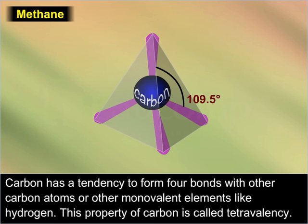For example, a molecule of methane has a tetrahedral structure and a bond angle of 109.5 degrees. In a methane molecule, a carbon atom forms covalent bonds with 4 hydrogen atoms.